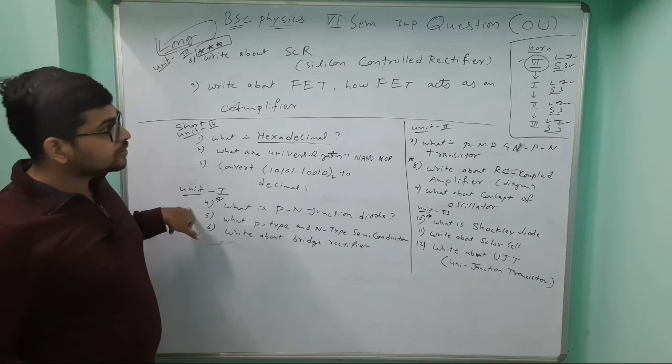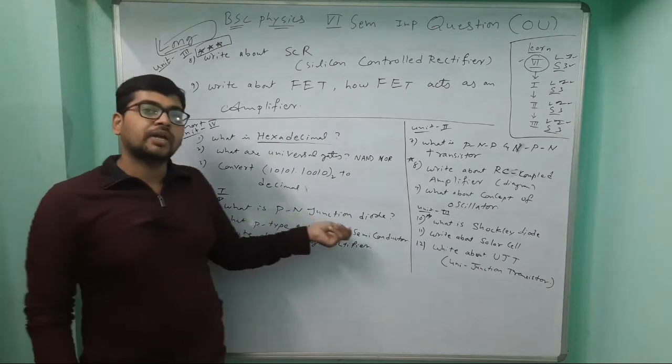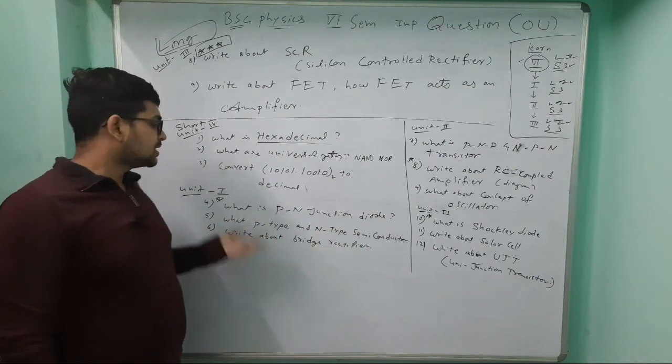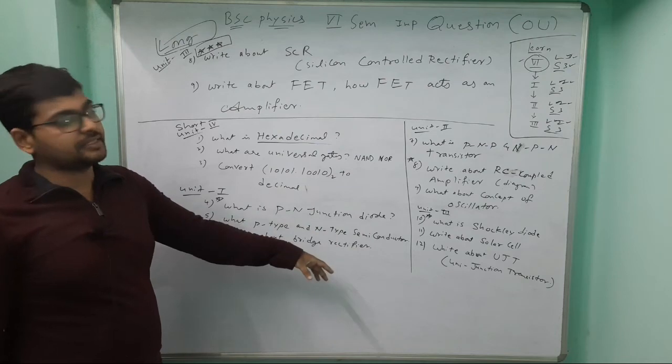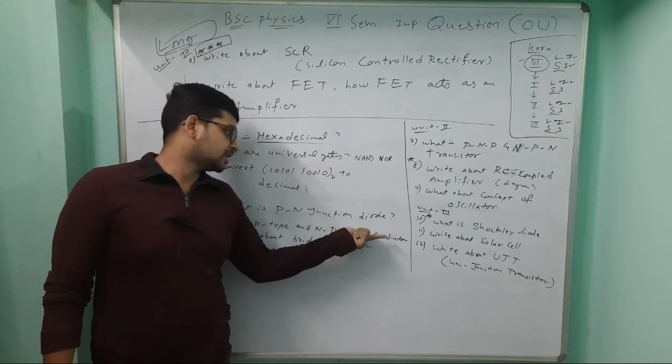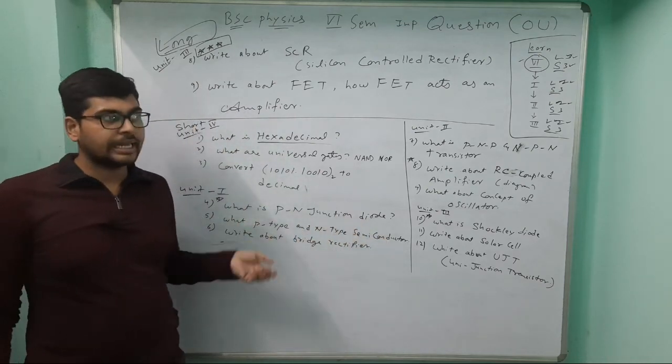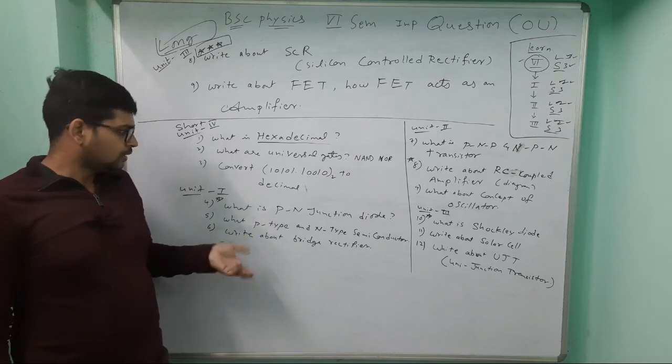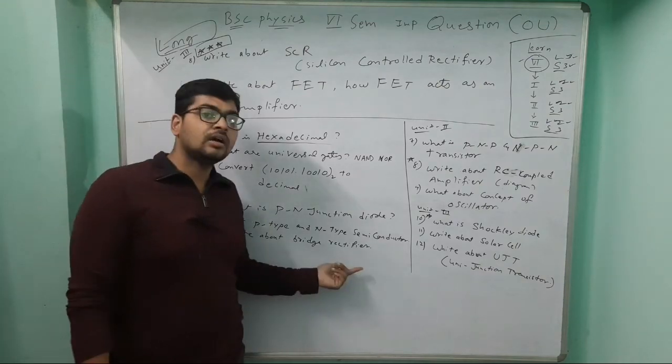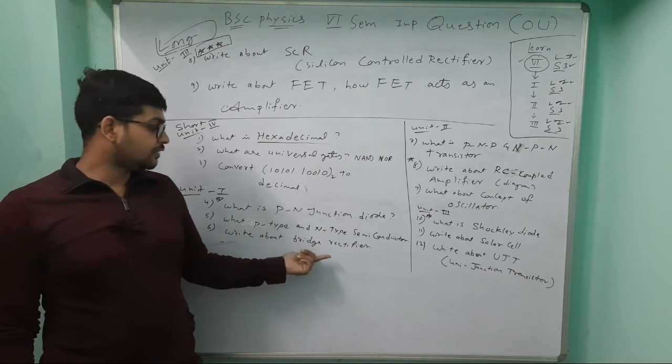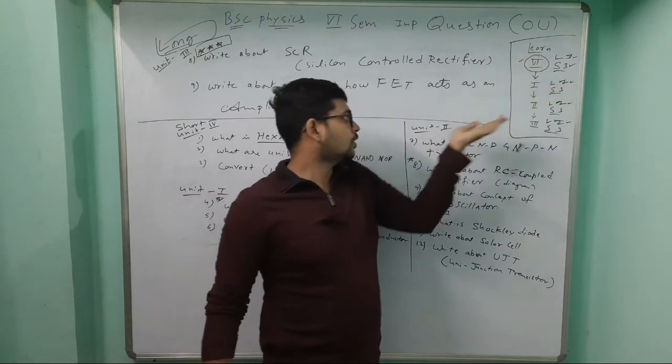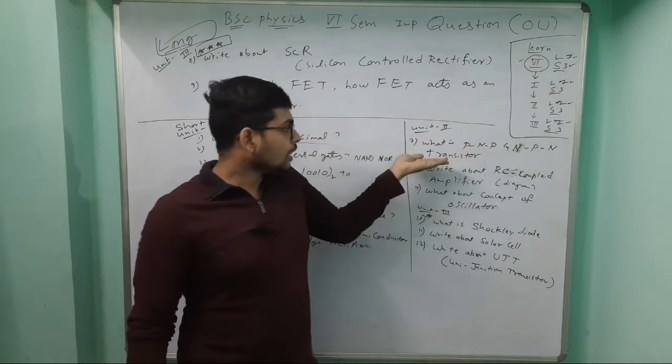Unit 1: What is PN junction diode? Very important. In this, we discuss semiconductors, characteristics, P-type or N-type. One more question: extrinsic semiconductor and intrinsic semiconductor. Next question: write about bridge rectifier with diagram. Here we use four diodes.